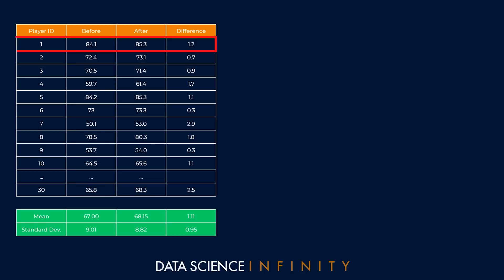For example, for player one in that first row, their best jump before the training program was 84.1 centimeters, their best jump after the training program was 85.3 centimeters, and this equates to a difference of 1.2 centimeters. I've only been able to fit a selection of the 30 players on screen here, but we would have this data for every player in our team.